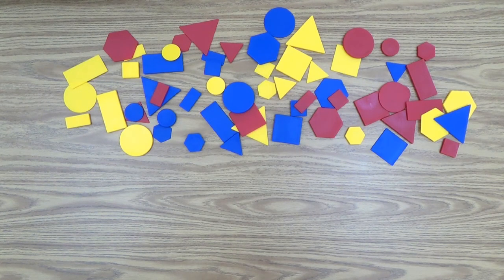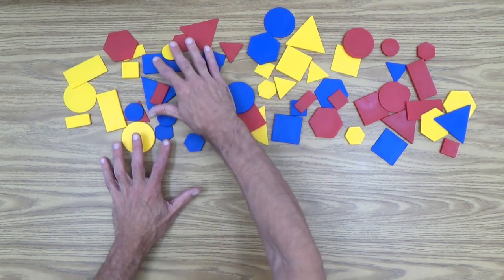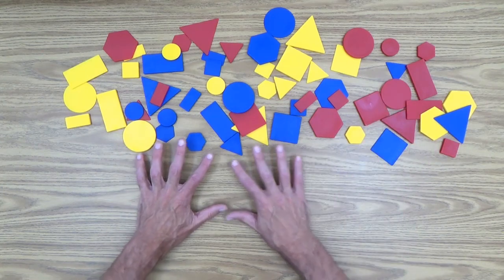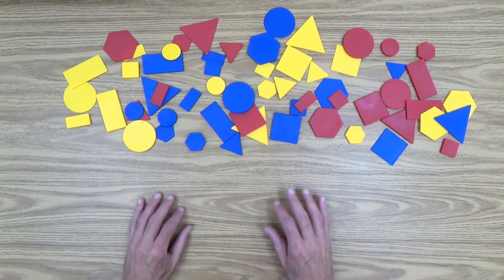So once you've done that, and of course, as you can see, I've spread them all out on the table here. And of course, that's what you want to do with your child, spread them out so he or she can see all of them.